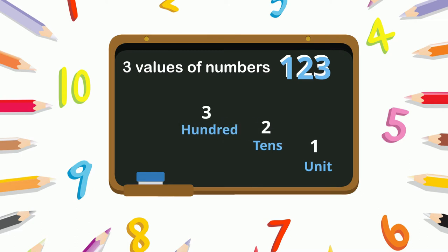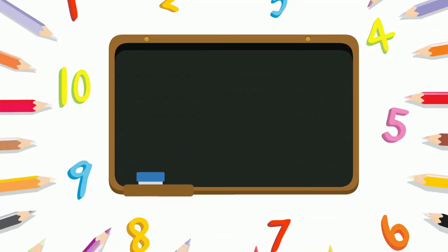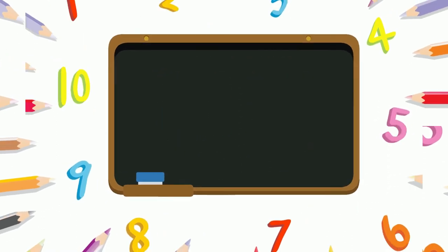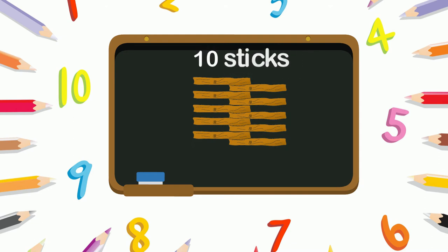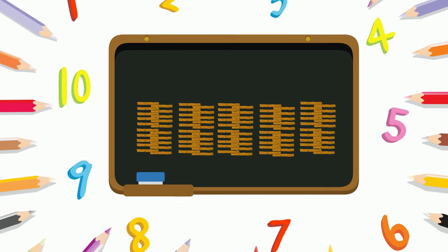Let's take the example of wooden sticks to learn about these values. You already know that one wooden stick is one unit. Ten sticks are ten units. When we group together ten sticks to make a bundle, it becomes one ten.